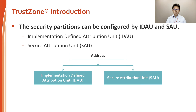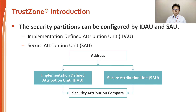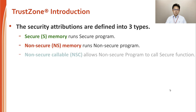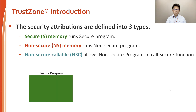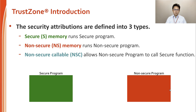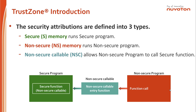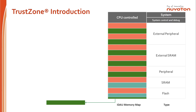In order to partition system security, memory address security attribution can be configured by IDAU and SAU. The security result is the higher security level compared between IDAU and SAU. The security attributes of a memory map address can be configured as Secure, Non-Secure (NS), or Non-Secure Callable (NSC). Secure code runs in secure memory map and non-secure code runs in non-secure memory map. The Non-Secure Callable entry function is located at an NSC region. Non-secure code can call a secure function via the NSC entry function if the secure code allows the access authority.